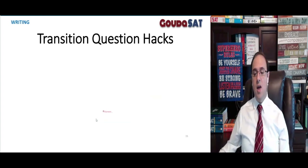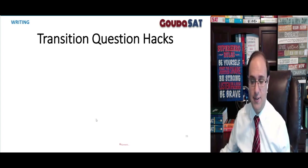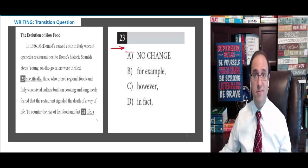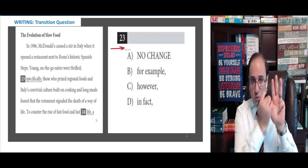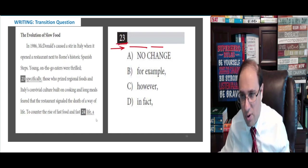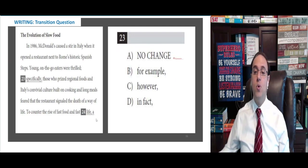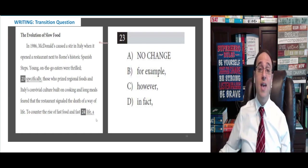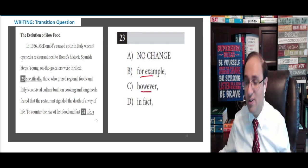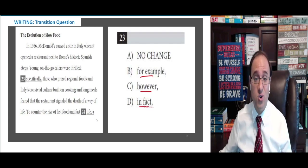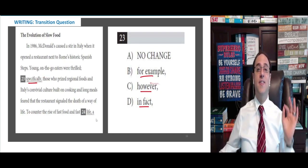Let's take an example. Before the transition question hacks, let's look at an example to know how the transition question will look on the test. Like grammar, punctuation, and vocabulary, transition questions have no question. You have the number, then you have four choices right away. How do you know that this is a transition question quickly on the test, and not a grammar, punctuation, or vocabulary question? You know it from the answer choices — for example, however, in fact — all of these are words we know are transition words.